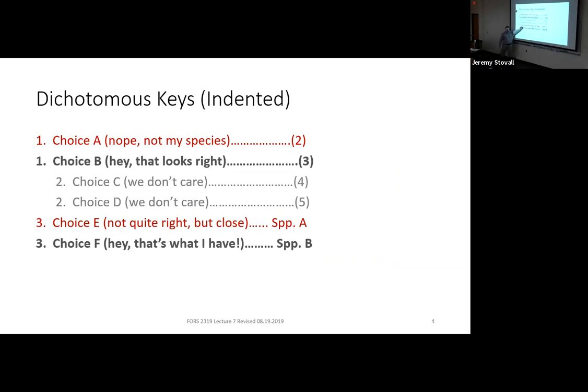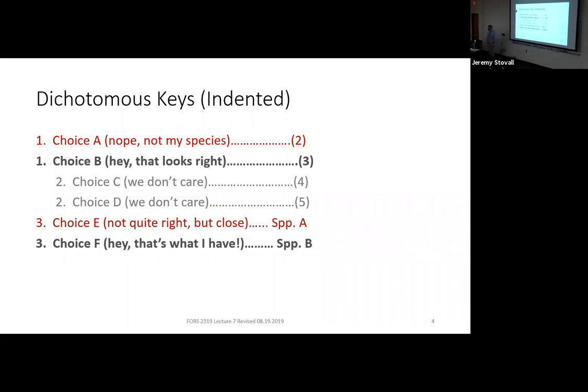At step three, choice E is not quite right, but choice F looks like what you have, and eventually it tells you what species you actually have — imaginary species B in this example.